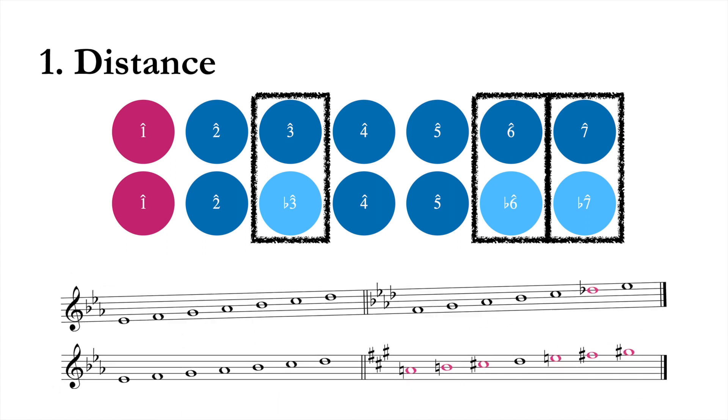In diatonic modulations, the key signatures have only one accidental differing from the preceding key, plus a leading tone if they're in minor. These are the easiest to manage, and indeed in classical music they're by far the most common.